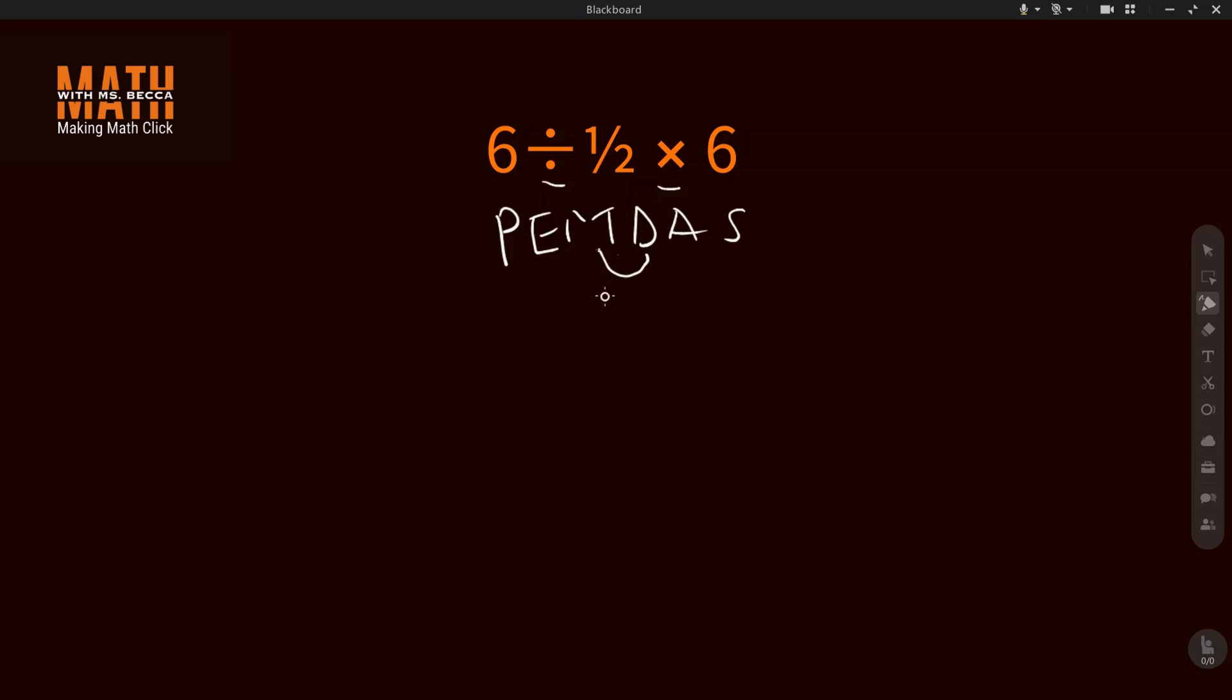you must solve the way they appear from left to right. In this question, we have division first, so we have to divide before we multiply. We have 6 divided by 1/2 times 6. If